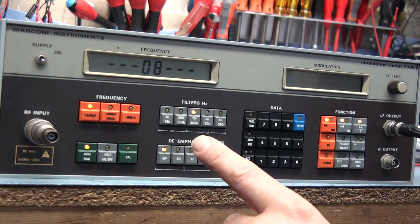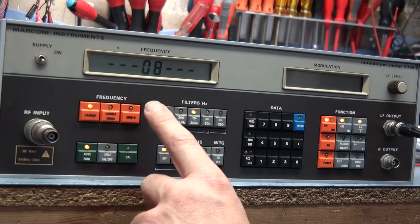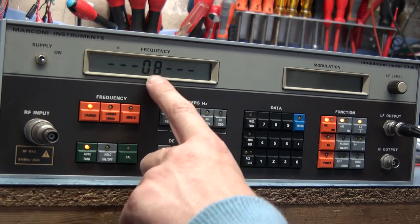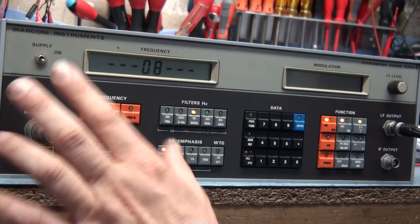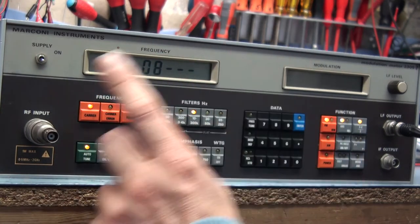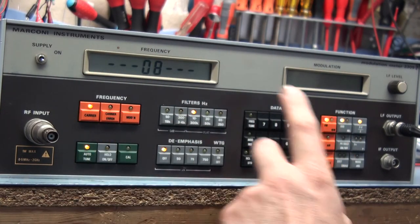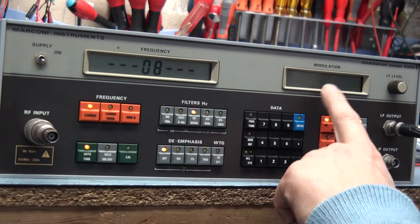Now it's just passed the calibration but it's come up with this error message. Usually it will say pass. Anyway, you put an RF signal in and it will show up the correct signal. And if you select FM modulation and modulate with one of the signal generators it will come up with the correct modulation.